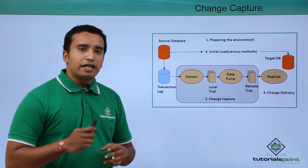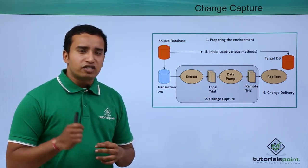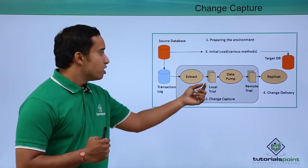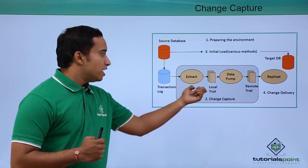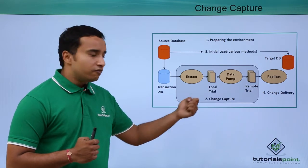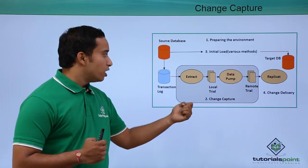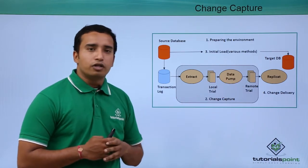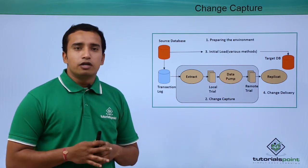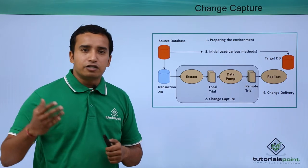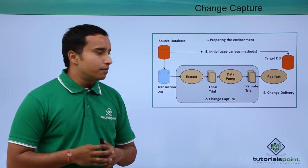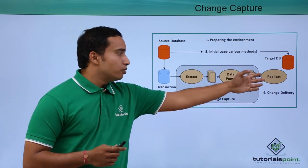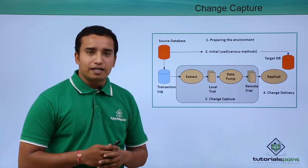There is a secondary optional extract process known as the data pump process, which takes your local trail file and passes it on to the remote database — that is your target database — known as the remote trail file, to the replication side.